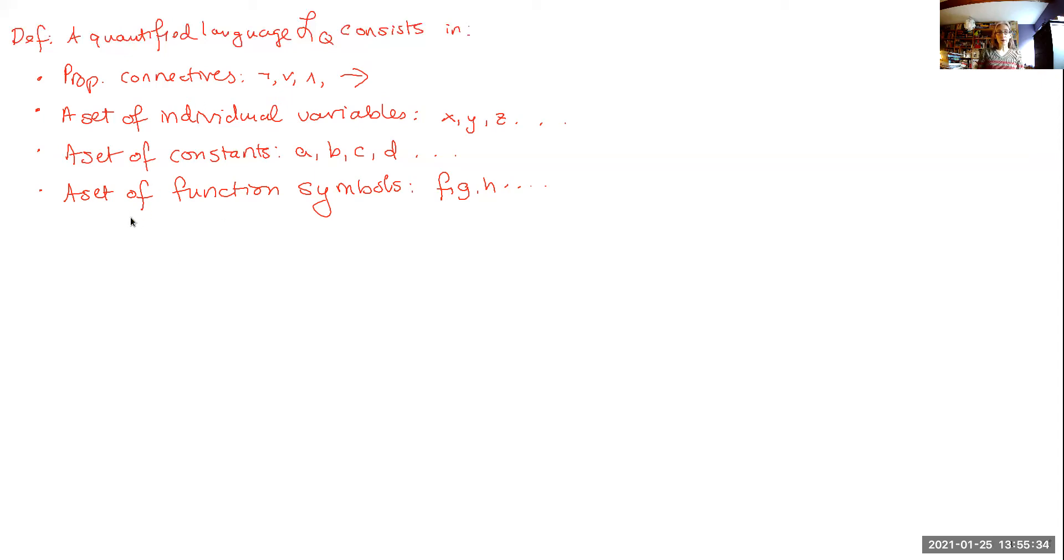Now these function symbols each come with what is called an arity, which is basically some natural number. So the natural numbers are things like one, two, three, etc. And this just tells us how many things we need as the input to the function. So you might think like multiplication. You take two numbers in, you perform the multiplication function, and you get a number out. So multiplication is a binary function.